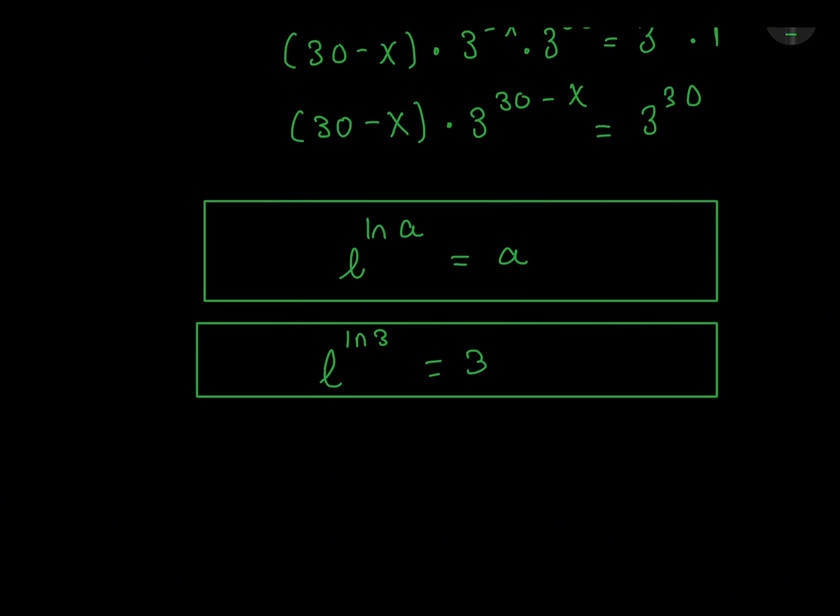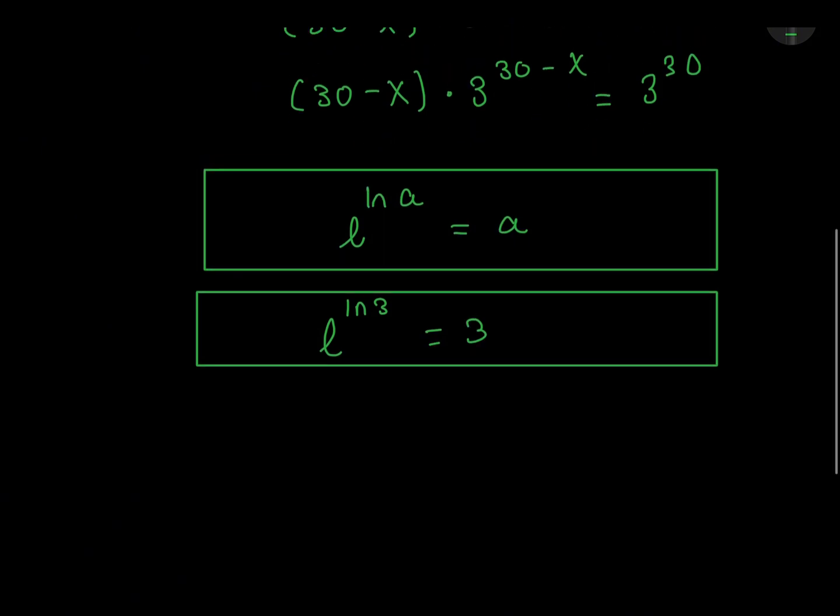We're going to apply this in our equation. So we'll have 3 to the power 30 minus x. And 3 equals e to the power ln 3. So 3, e to the power ln 3, brackets, to the power 30 minus x.